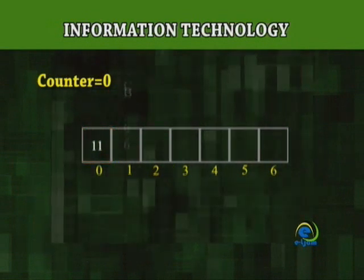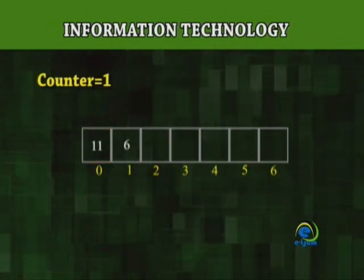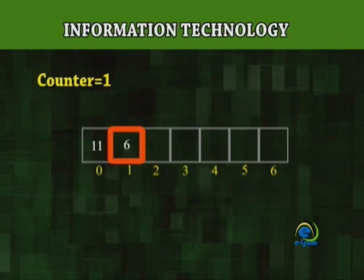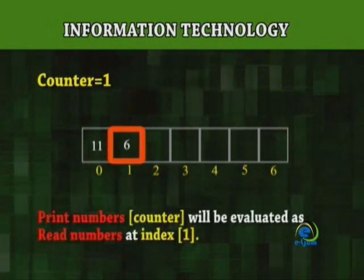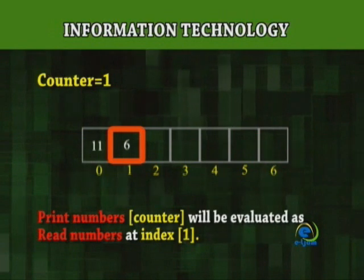The value of the counter will then go to 1 at the next iteration of the loop, and read numbers counter will be evaluated as read numbers at index 1.